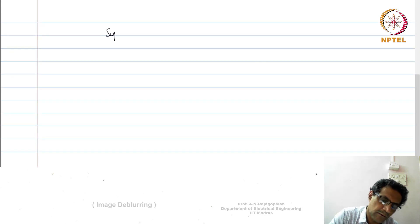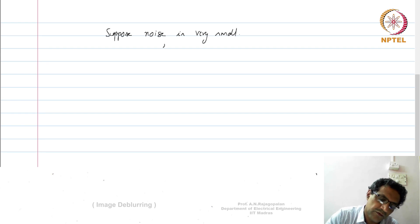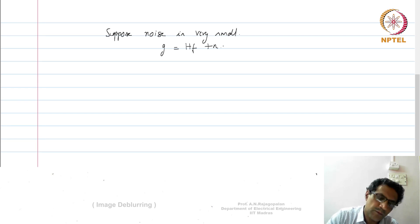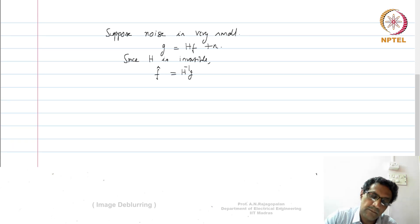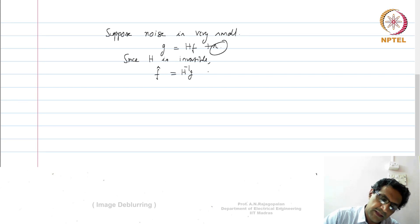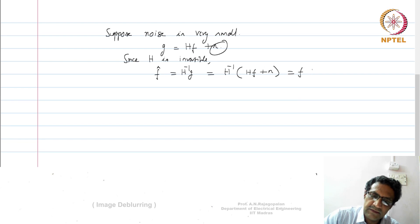Suppose noise is very small — very tiny noise in the observation. You would be tempted to do the following: since H is invertible, I might simply say let me approximate F-hat as H-inverse times G, ignoring the small noise when computing the solution. But H-inverse G is nothing but H-inverse applied to the full observation model, which has noise in it. Therefore this will become F plus H-inverse N.